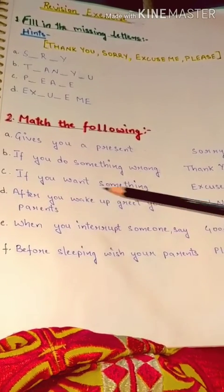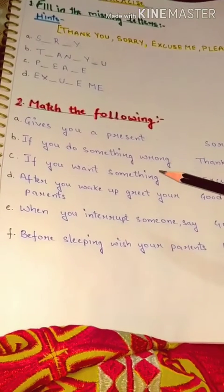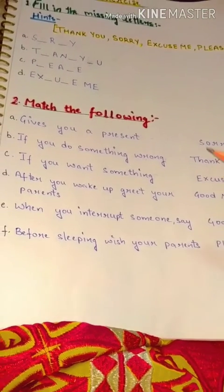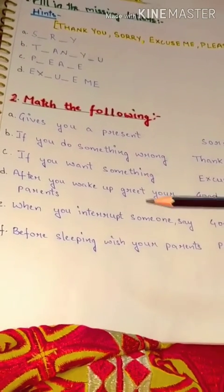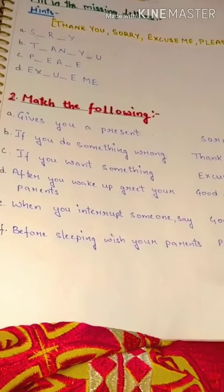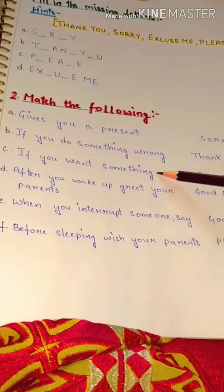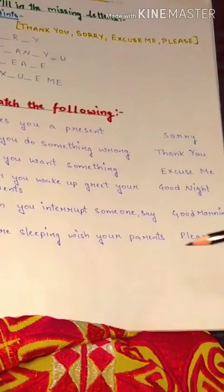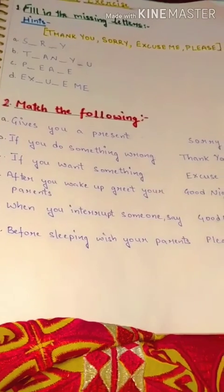Number C: if you want something — for example if you want something from your father or mother, what will you say? Please. For example, if you want food from your mother you will say, 'Mama, please give me food.' Now search for the word 'please' and draw a line from this sentence to that word.